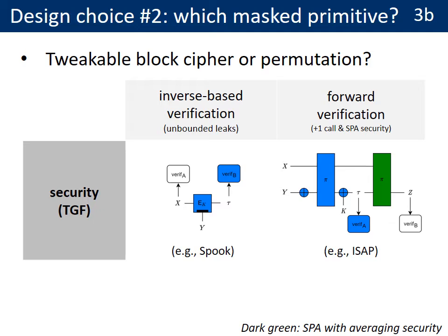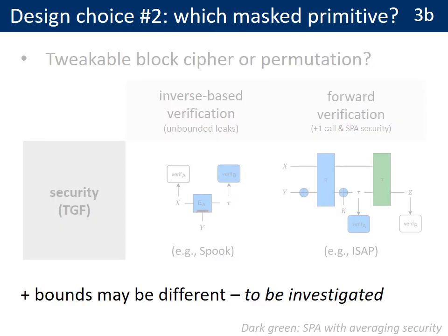Another reason that makes tweakable block ciphers quite convenient for side-channel security is that they enable an inverse-based verification. This allows avoiding performing the verification directly on the tags. In this case, even the verification can leak in an unbounded manner, while performing the verification on the tags requires DPA security. A similar idea can be used with sponges, but at the cost of an additional permutation call and under a slightly stronger assumption, namely security against simple power analysis (SPA). For the TBC-based solution, we directly have beyond-birthday security.